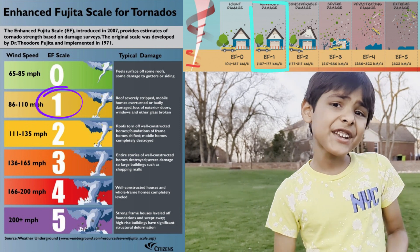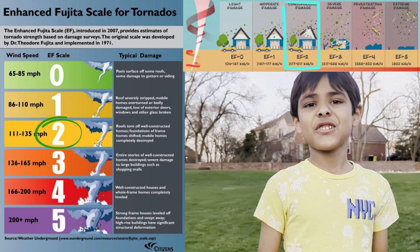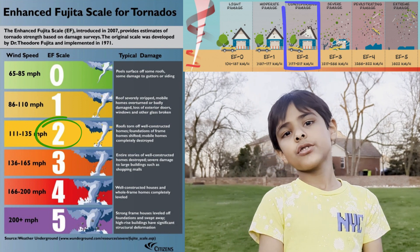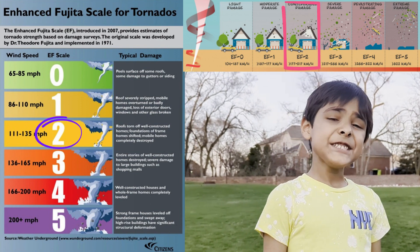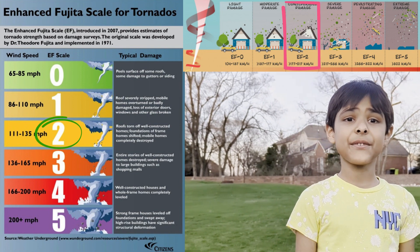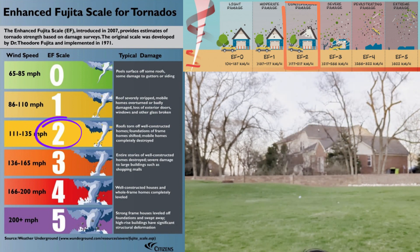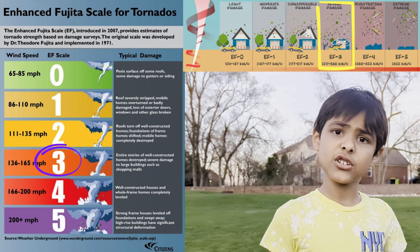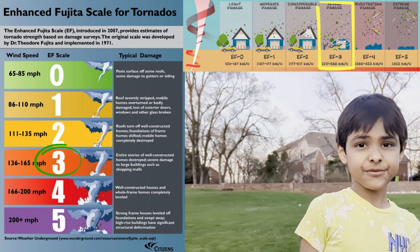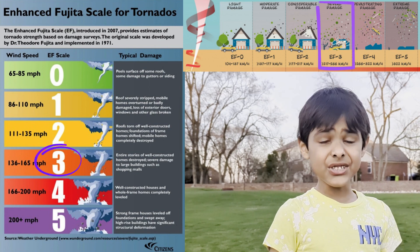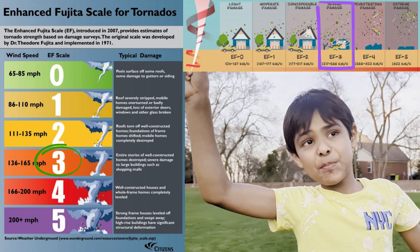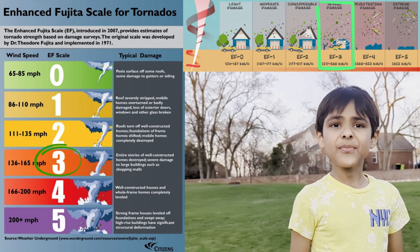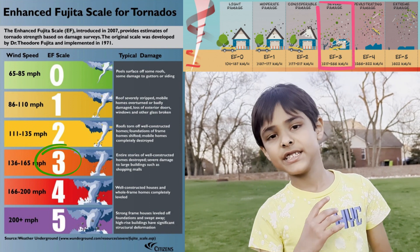EF-2 is where things start getting a bit more powerful. An EF-2 can rip a roof off of your house or apartment. And EF-2s get stronger when they turn into an EF-3, and that's where the real commotion begins. EF-3s can rip the entire top part of an apartment, a condo, or a house. That is really not good for people who live in the upper part. EF-3s are way more dangerous than EF-0s, EF-1s, and EF-2s.